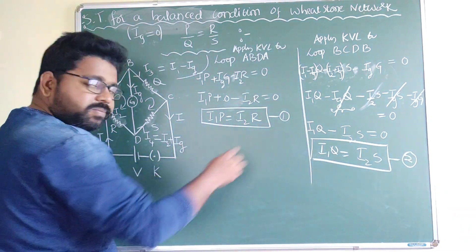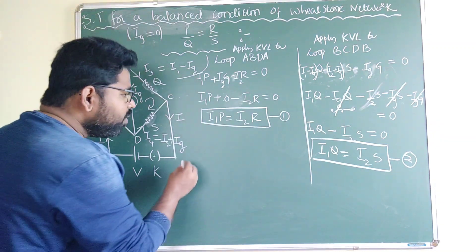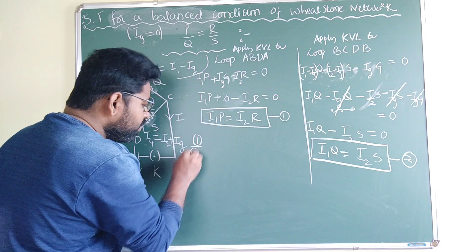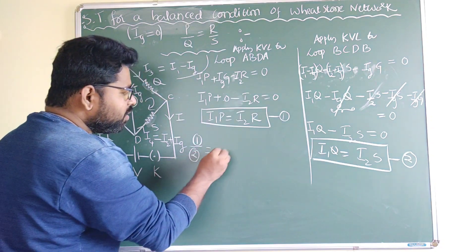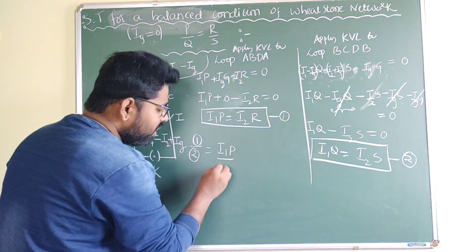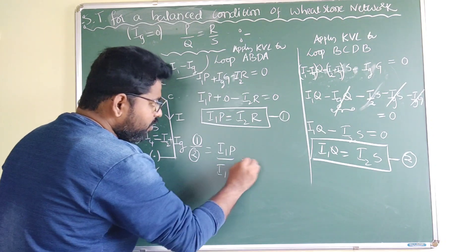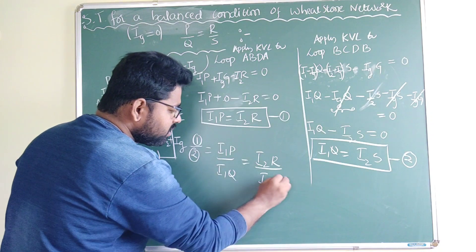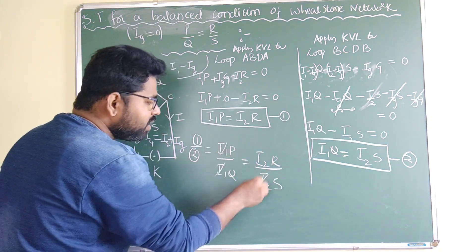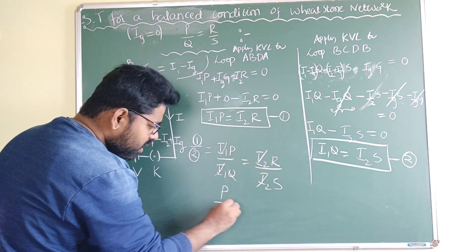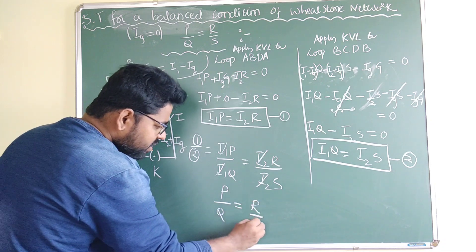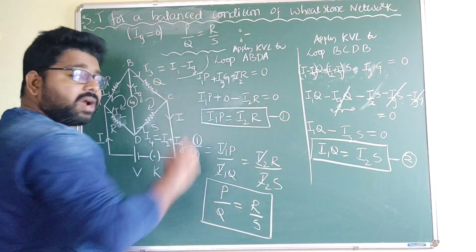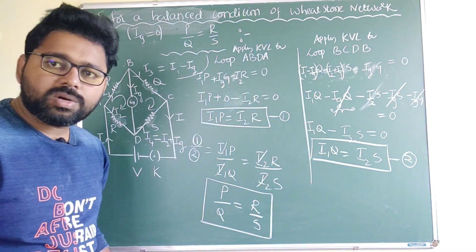Dividing Equation 1 by Equation 2: (I1·P)/(I1·Q) = (I2·R)/(I2·S). I1 cancels on the left and I2 cancels on the right, giving P/Q = R/S. Hence, the balanced condition of the Wheatstone bridge is proved.